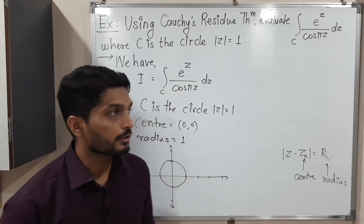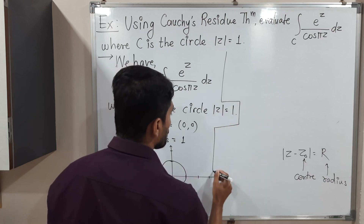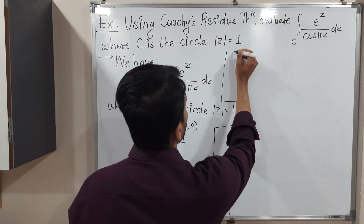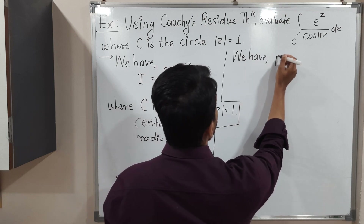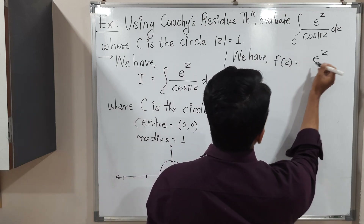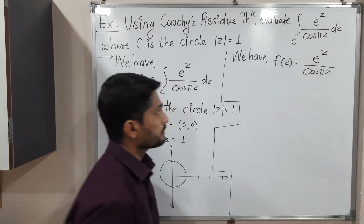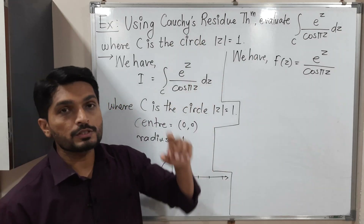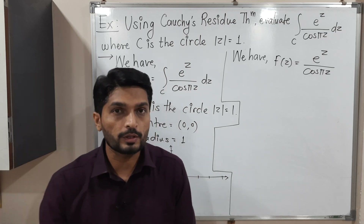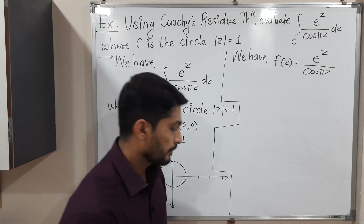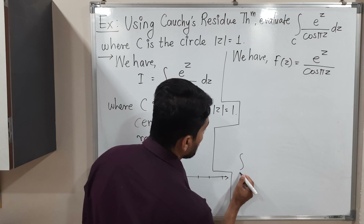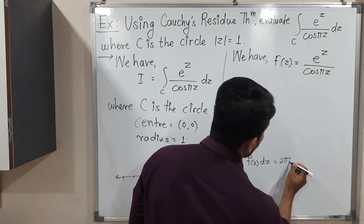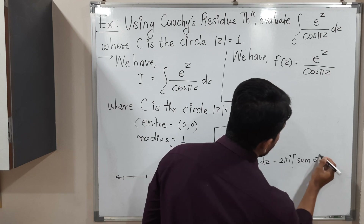After drawing the curve, we consider the given function. So f(z) equals e raised to Z upon cos(πZ). We have to solve this integration with the help of Cauchy's residue theorem. Cauchy's residue theorem says the integration over C of f(z) dz equals 2πi times the sum of residues.